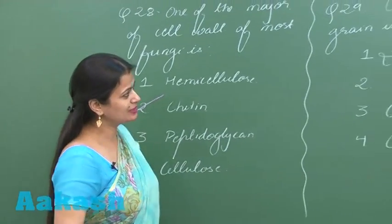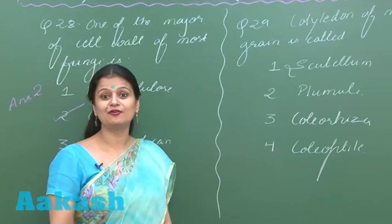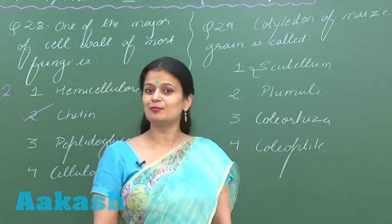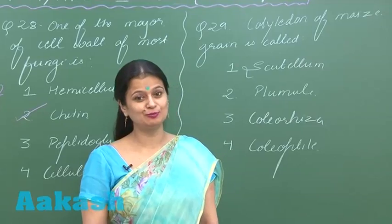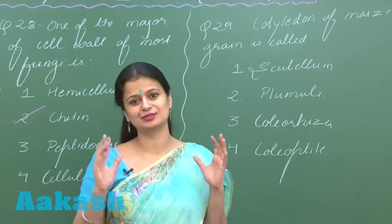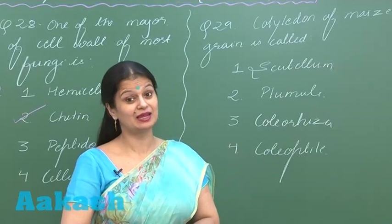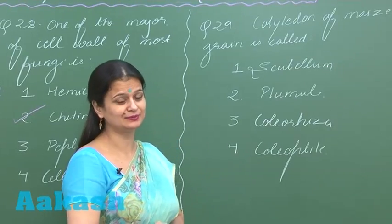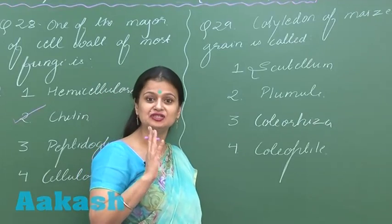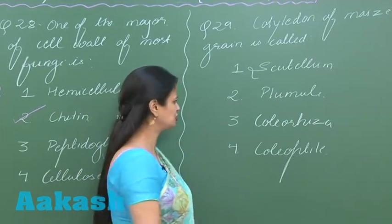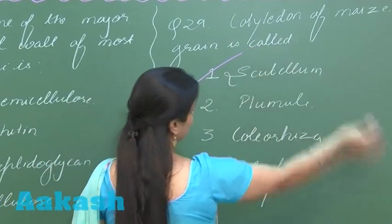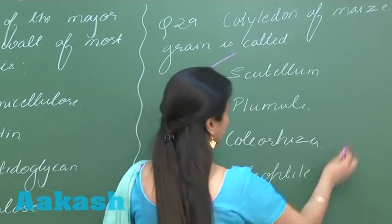Question number 29 — the cotyledon of maize. Maize is a monocot, and in the case of monocots there is one large-sized cotyledon. In the case of maize, that cotyledon is shield-shaped, and we call that shield-shaped cotyledon the scutellum.